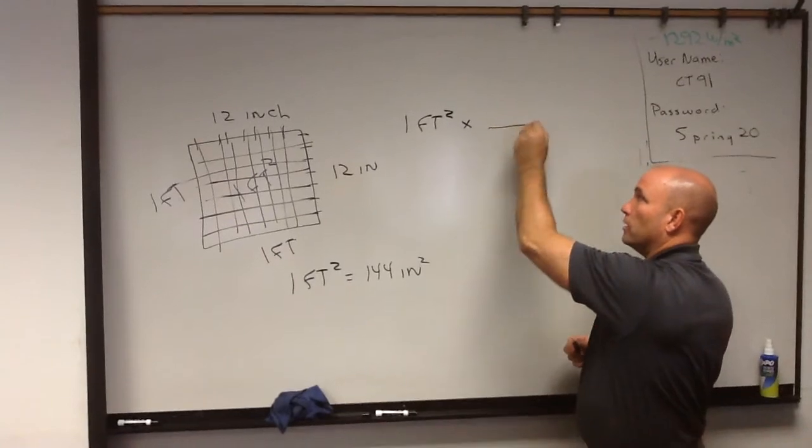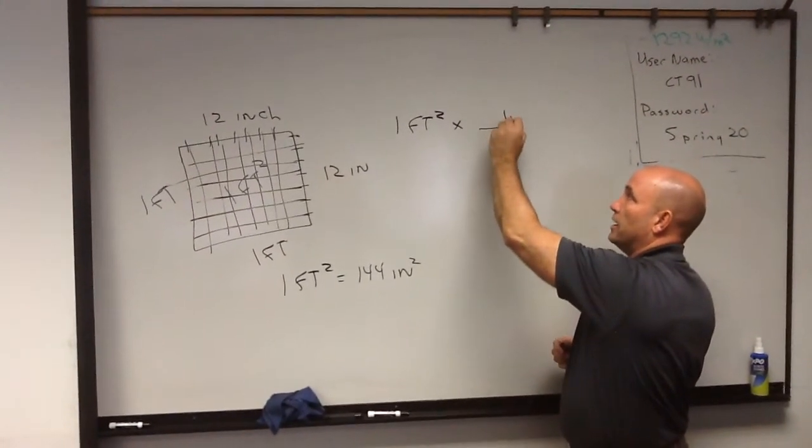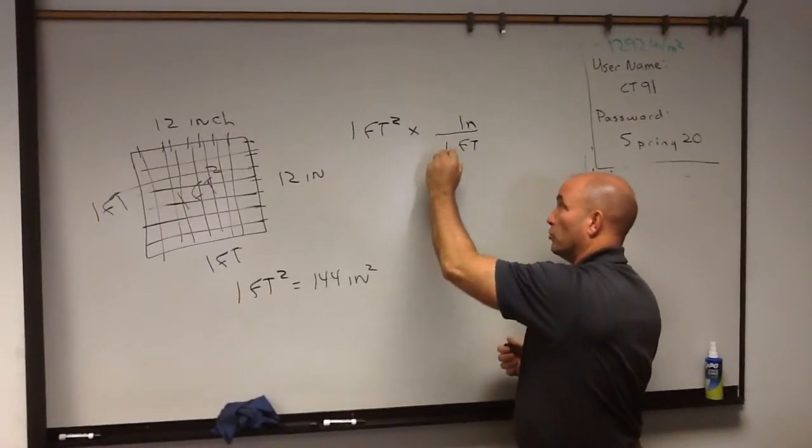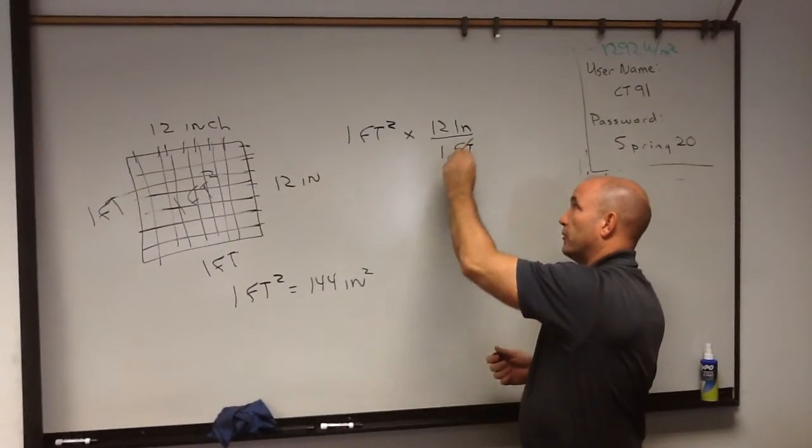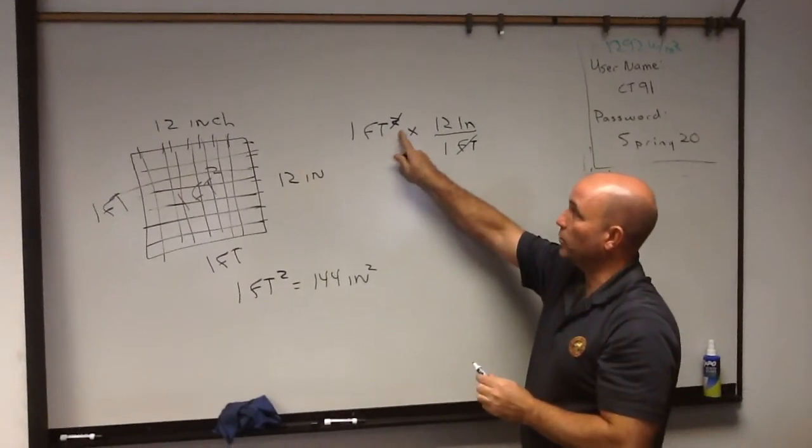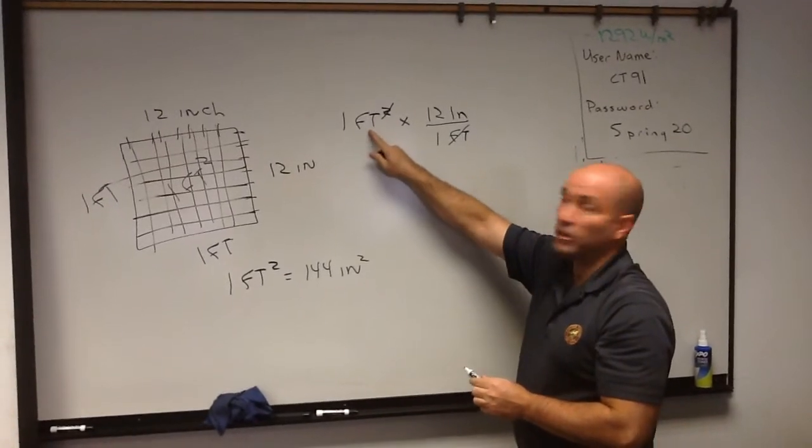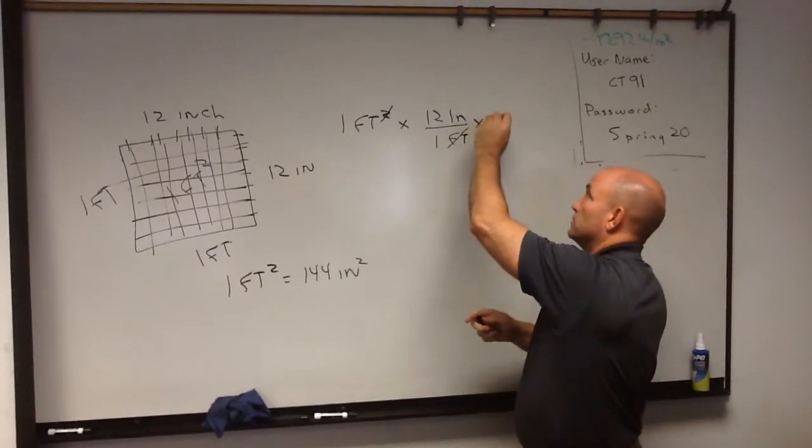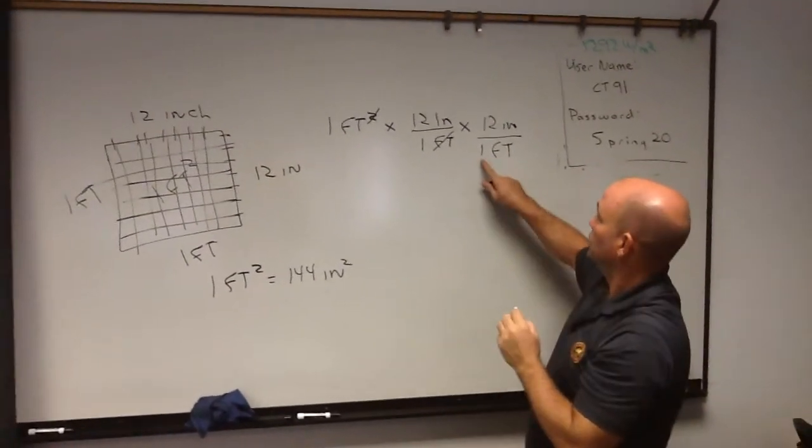I have one square foot. And just like we did before, we're going to say, hey, that's a foot. I'm going to put the foot on the bottom. Inches are going to be on the top, right? Well, what's the conversion? One foot is 12 inches. Now, when we go to do it, if we only do it one time, we have feet squared, and we've divided by foot. So, that turns it into feet. So, how do we get rid of this other foot? Well, we've got to do it again.